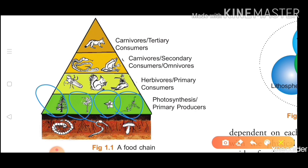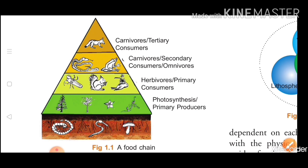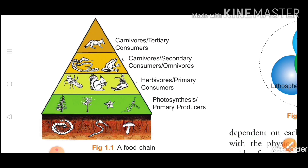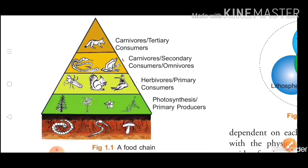The next thing is consumers. Consumers are mainly of three types: the first one is herbivores, second is omnivores, and third is carnivores. These are the three types of consumers available. We will understand this through this figure.